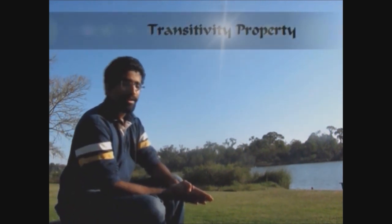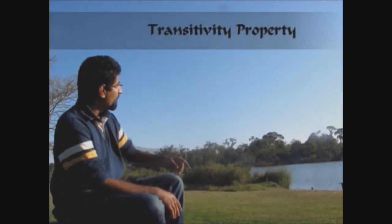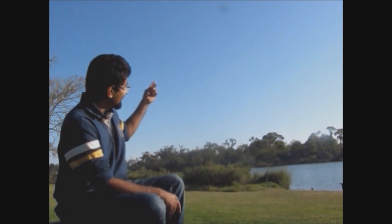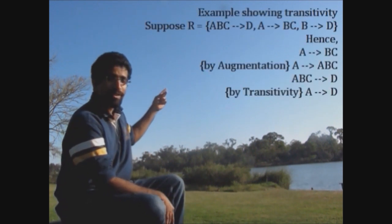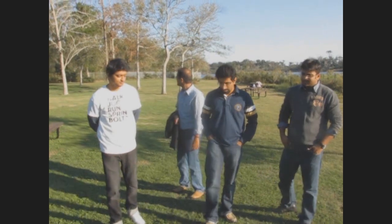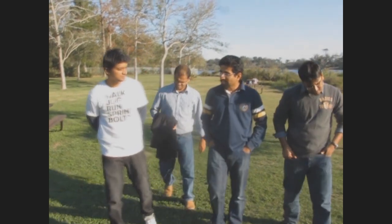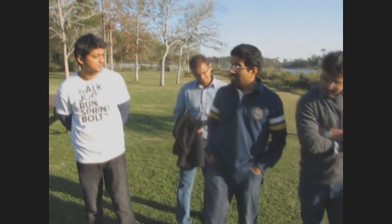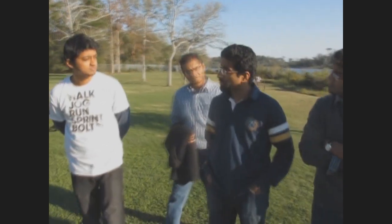Now let's see the transitivity property. If we have A functionally determines B, and B functionally determines C, then by transitivity, A functionally determines C. This is my third and last axiom. And there's a list of examples for transitivity properties. Do you know my axioms are sound and complete? No. Well, they're sound — that means nothing can be derived outside the boundary of F closure.